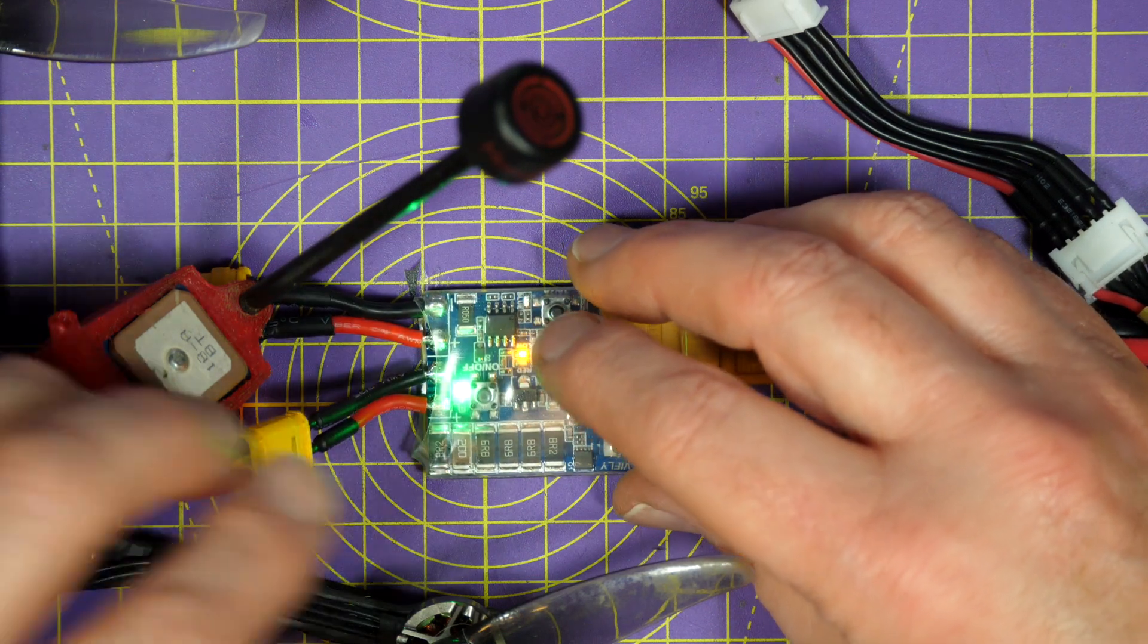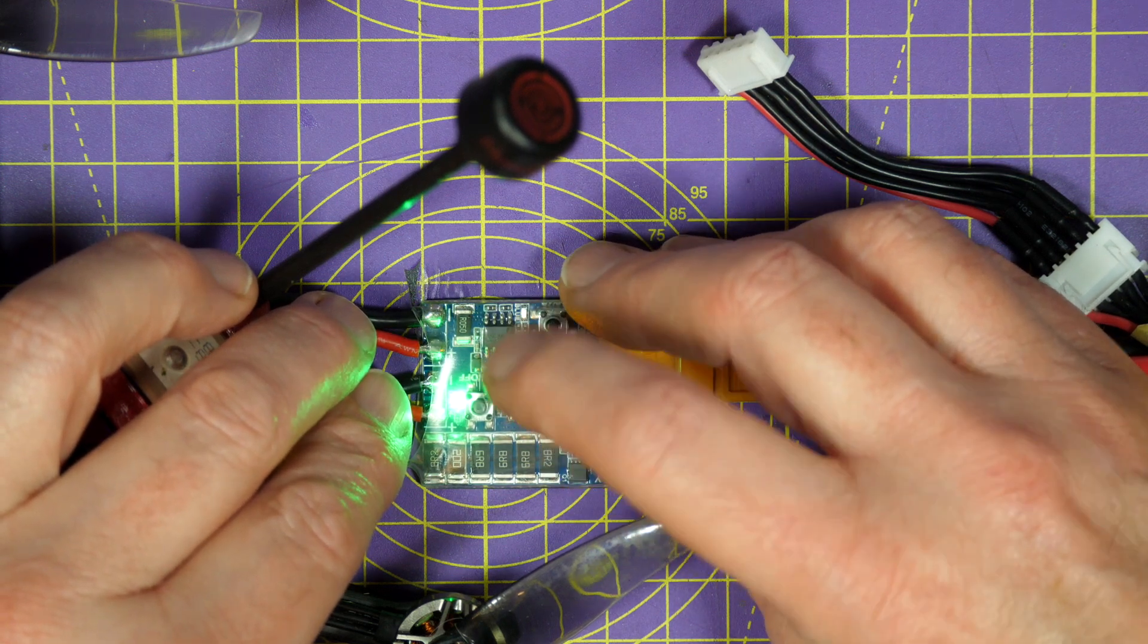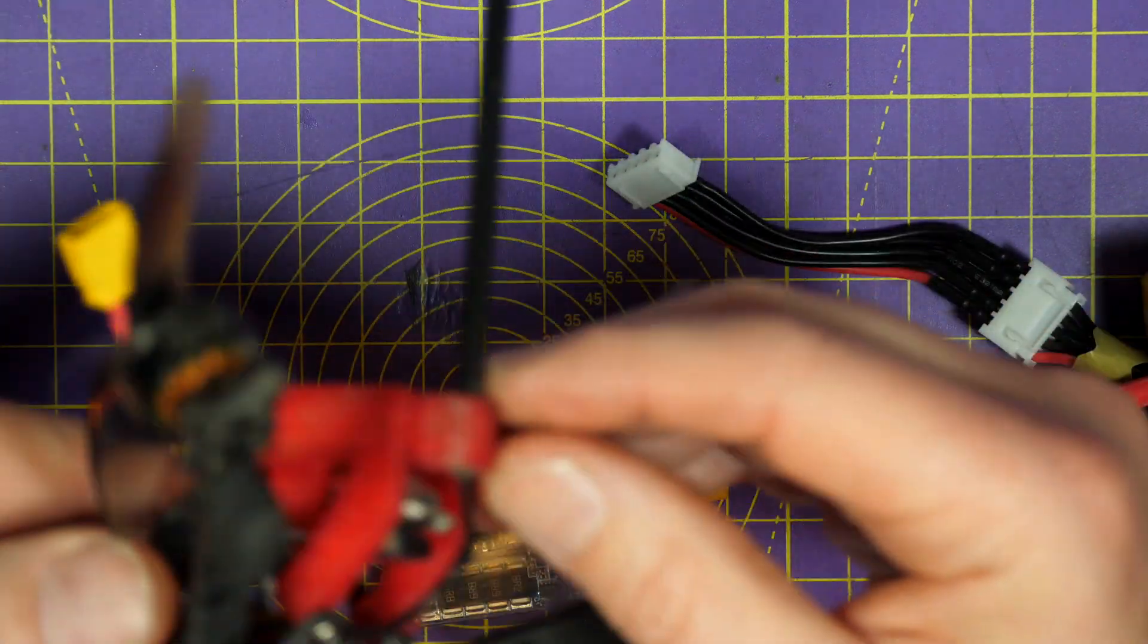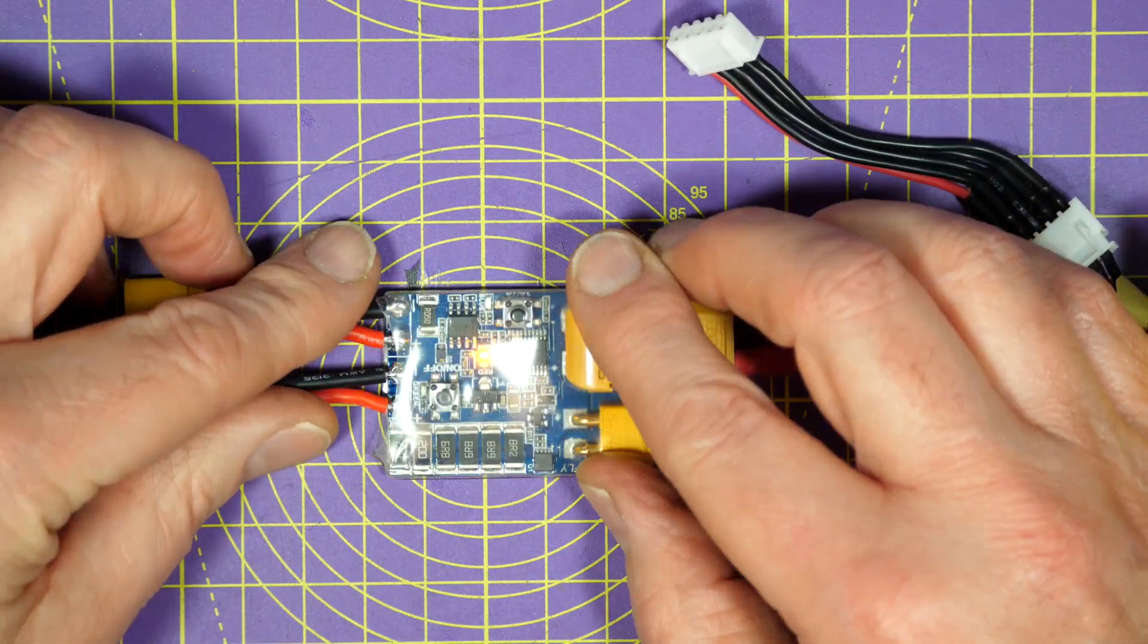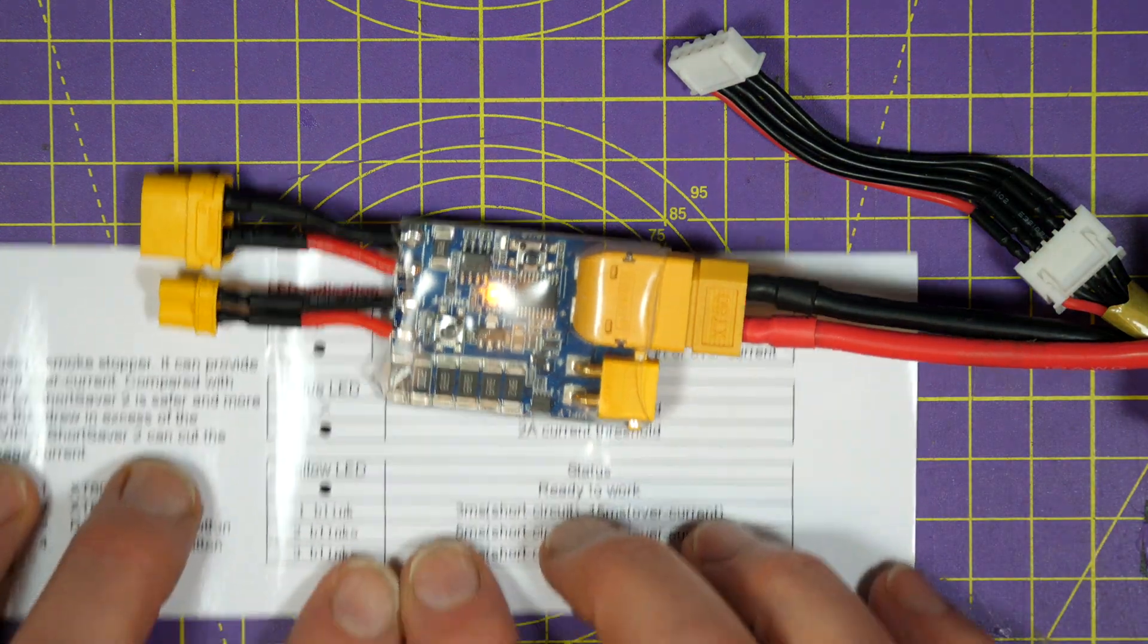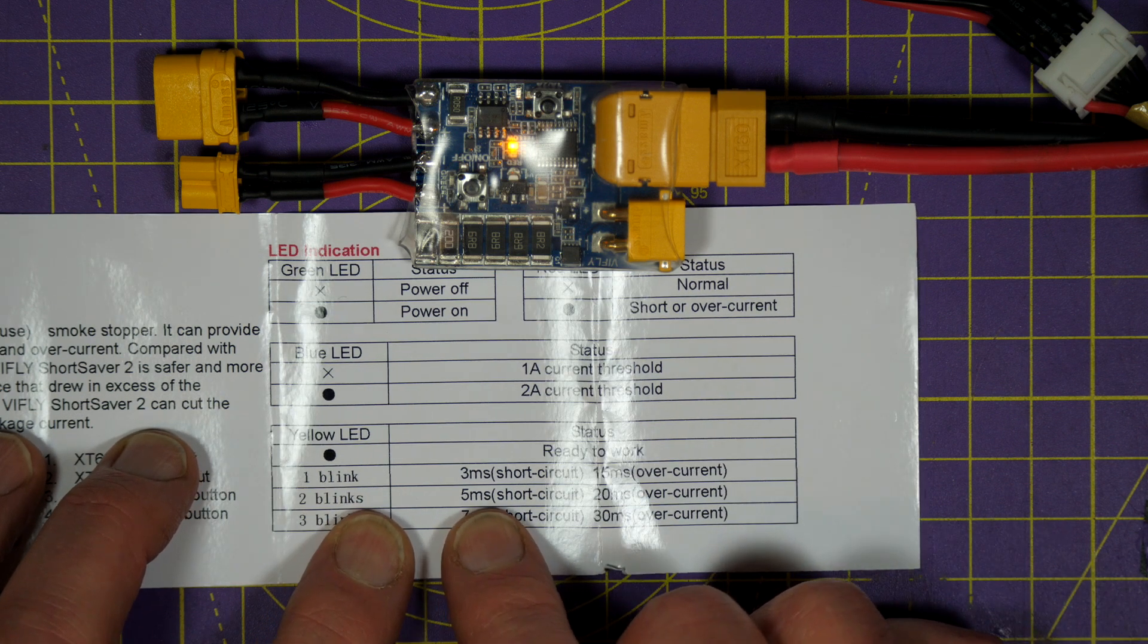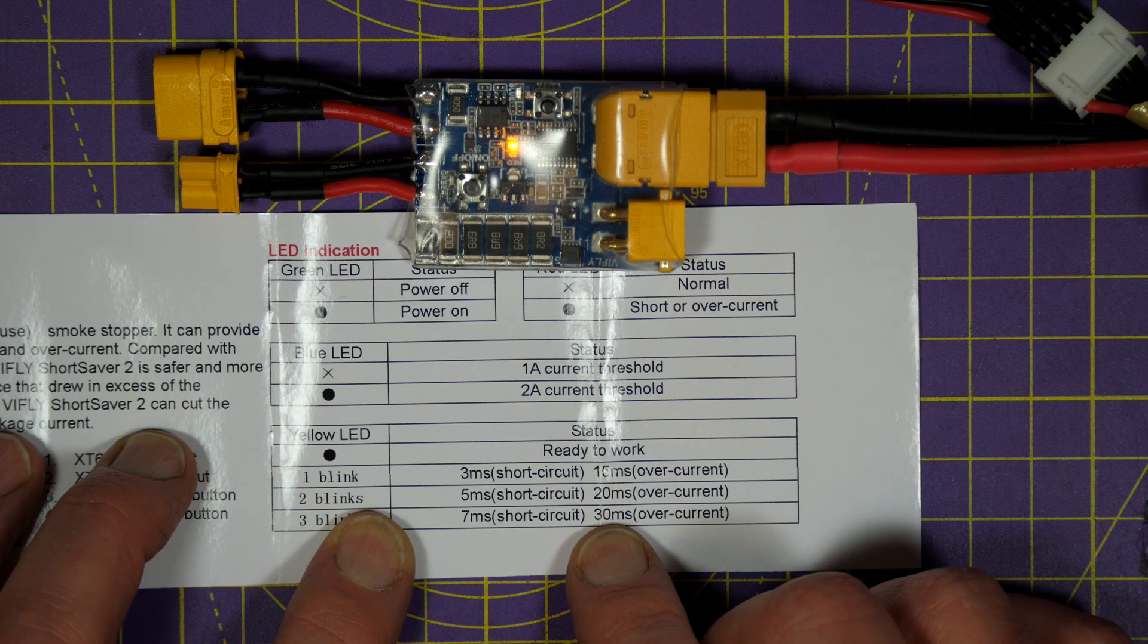On the original version, you also had to bridge a couple of power pads on the PCB to change the trip response time. But you can now do that on this as well, directly. Let me just turn that off, unplug this, make it a little bit easier. To change the trip response times, and this is all labelled down here on this little manual that comes with it, you can change it from 3ms short circuit, 50ms overcurrent. You can now have 5ms short circuit, 20ms overcurrent, and 7ms short circuit, 30ms overcurrent.